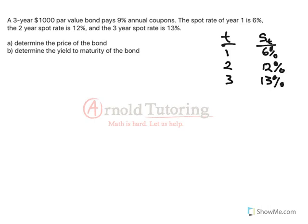So the first question we have to answer is determine the price of the bond. Like all bond questions, I would recommend drawing a timeline for our cash flows. It's a 3-year bond, so today's time 0, time 1, time 2, time 3.